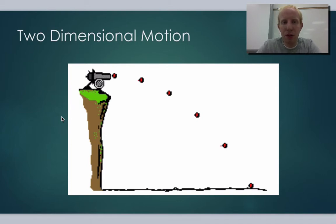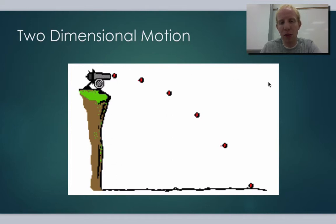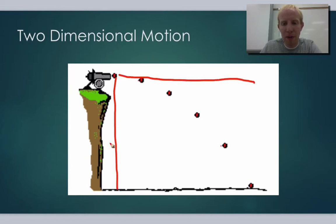In two-dimensional motion, it's really nice because we can treat each dimension or each direction as separate parts of the equation — separate equations for each direction. So for example, in this case, we have the object falling to hit the ground and we have the object moving to the right. We can actually treat each of those directions separately. We look at the equation for it falling straight down, and we look at the equation for it going to the right.